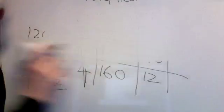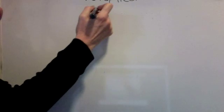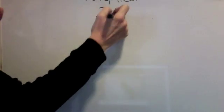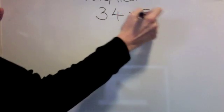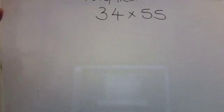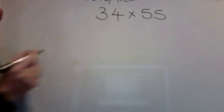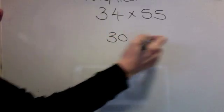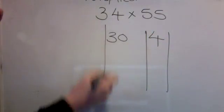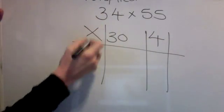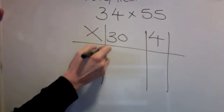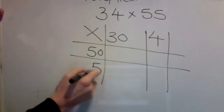Last one. Have a go at this. 34 times 55. Pause the video, have a go. Here's the answer. 30 and 4 in a grid. Times by 50 and 5.